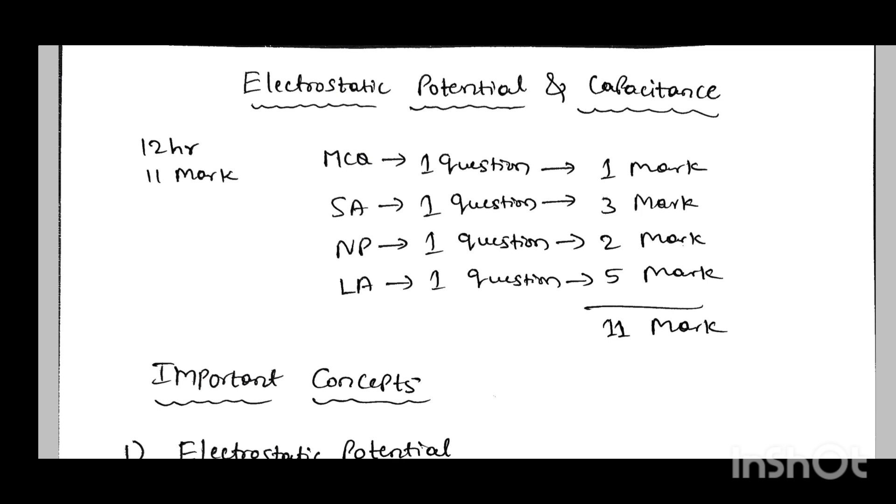First one is MCQ. From this chapter, you will get one MCQ question which carries one mark and one SA type question which carries three marks and one NP numerical problem which carries two marks. Next, one long answer which carries five marks. Totally 11 marks from this chapter.